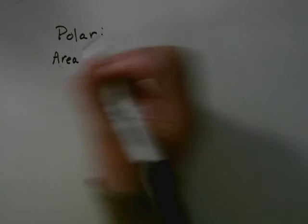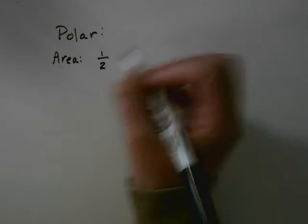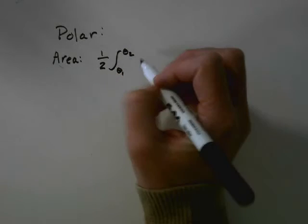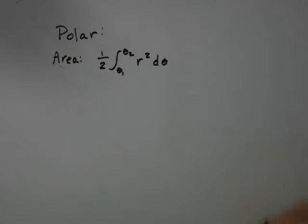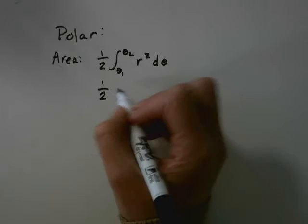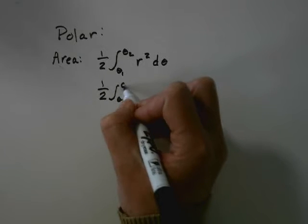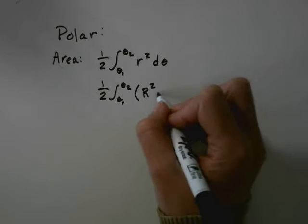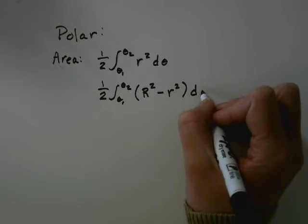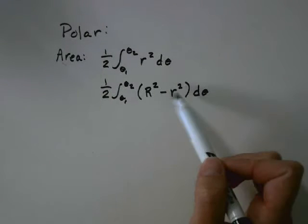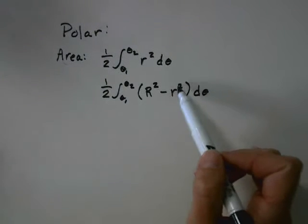Very commonly, you will be asked about area. The area formula is going to be 1/2 the integral from theta 1 to theta 2 of r squared d-theta for one graph. If there's more than one, it's going to be the outside one — big R squared minus little r squared. Looking at a cross-section from the origin, whichever is farther from the origin is the outside. You have to individually square them.